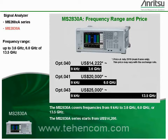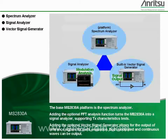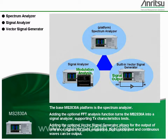The MS2830A covers frequencies from 9 kHz to 3.6 GHz, 6.0 GHz, or 13.5 GHz. The MS2830A series starts from $14,200. The base MS2830A platform is the spectrum analyzer. Adding the optional FFT analysis function turns the MS2830A into a signal analyzer supporting transmitter characteristics tests.